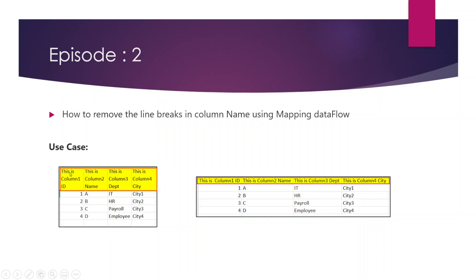In our use case, this is how our source file looks — it has column names, but inside the column name there are some line breaks, meaning part of the column names are separated by a new line. We want to convert it to a format where there are no line breaks and we replace them with a space. So how do we achieve this using data flow?